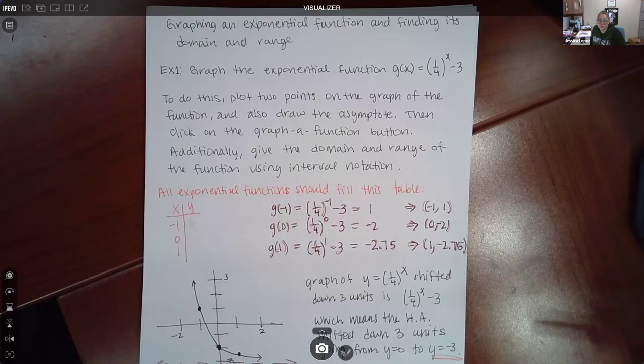In the instructions, to do this plot two points on the graph of the function and also draw the asymptote. Then click on the graph a function button. Additionally give the domain and range of the function using interval notation.